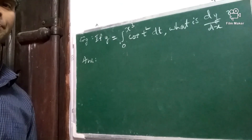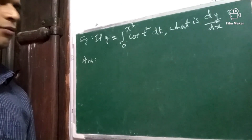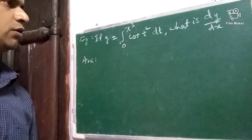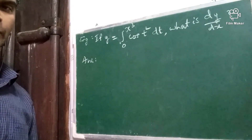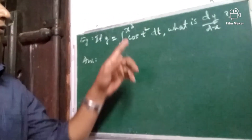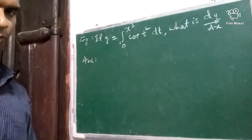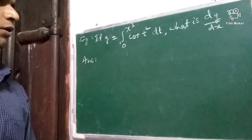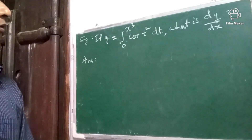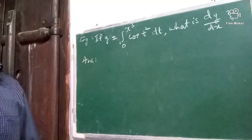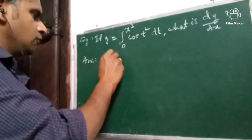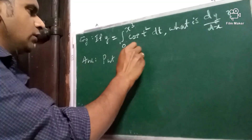The next example: if y = ∫₀^(x³) cos(t²) dt, compute dy/dx. Look at the upper limit — it is x³, not x. So you cannot directly apply the fundamental theorem of calculus. What we will do is put u = x³.